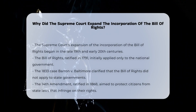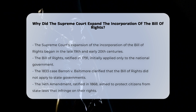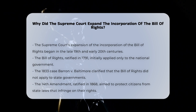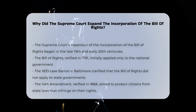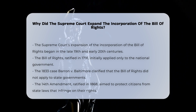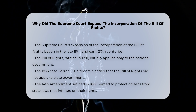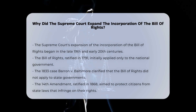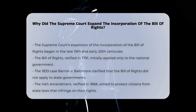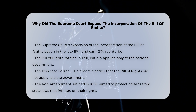The Supreme Court's expansion of the incorporation of the Bill of Rights is a complex and evolving process that has its roots in the late 19th and early 20th centuries. Initially, the Bill of Rights, ratified in 1791, applied only to the national government and not to the states. This was clarified in the 1833 case of Barron v. Baltimore, where Chief Justice John Marshall ruled that the Bill of Rights did not apply to state governments.